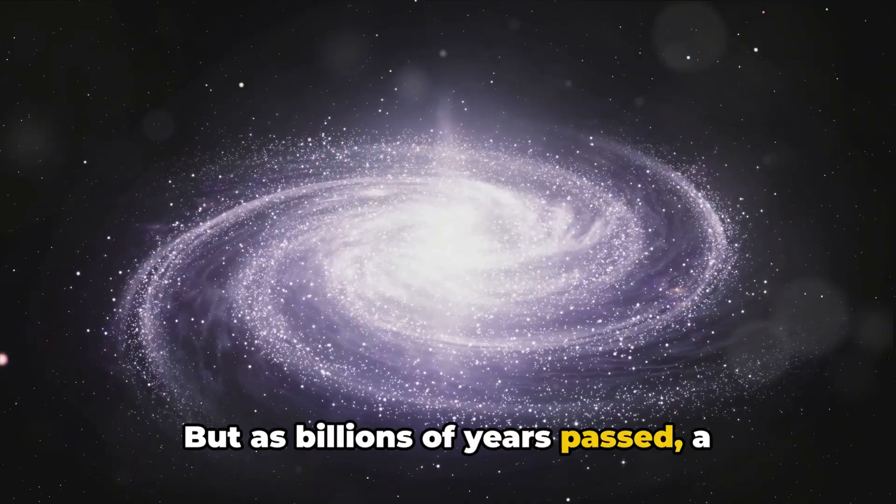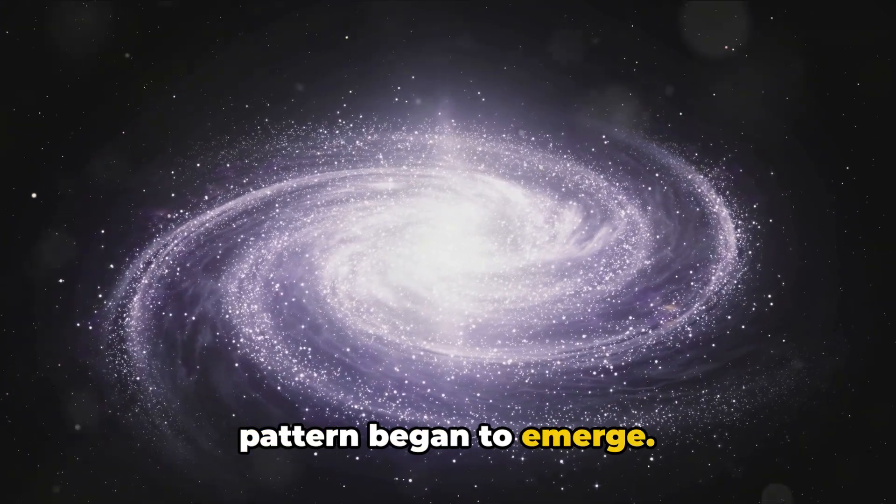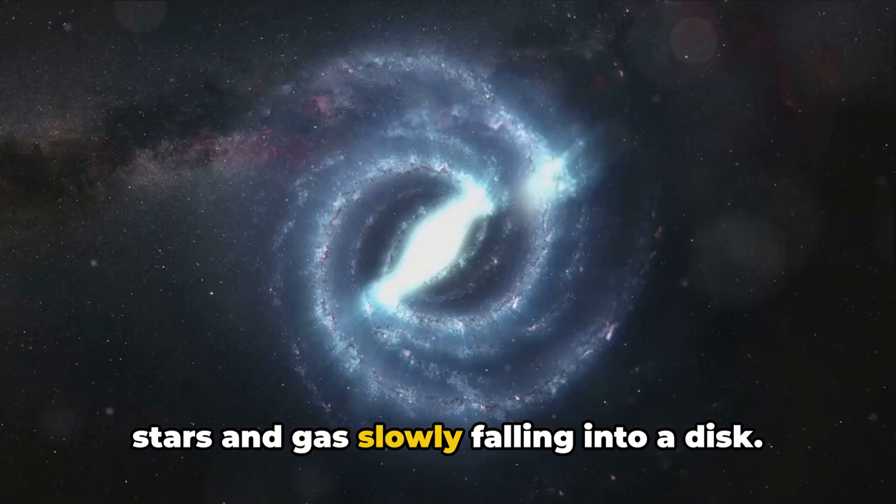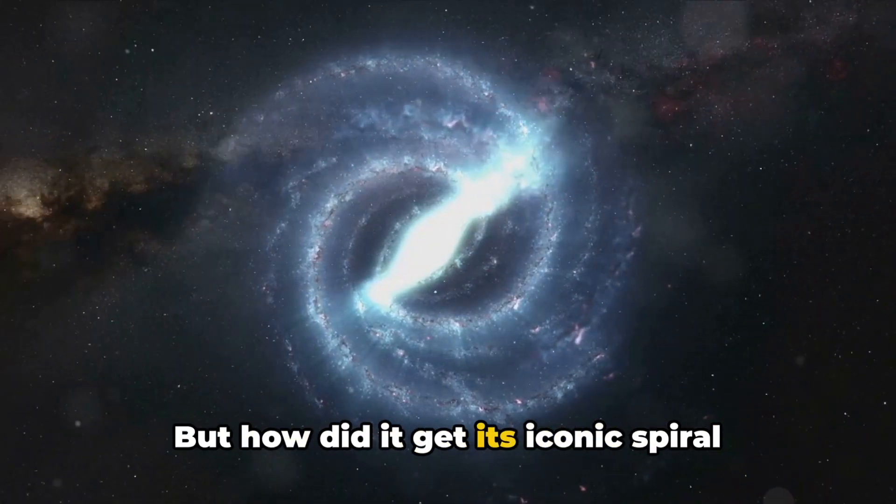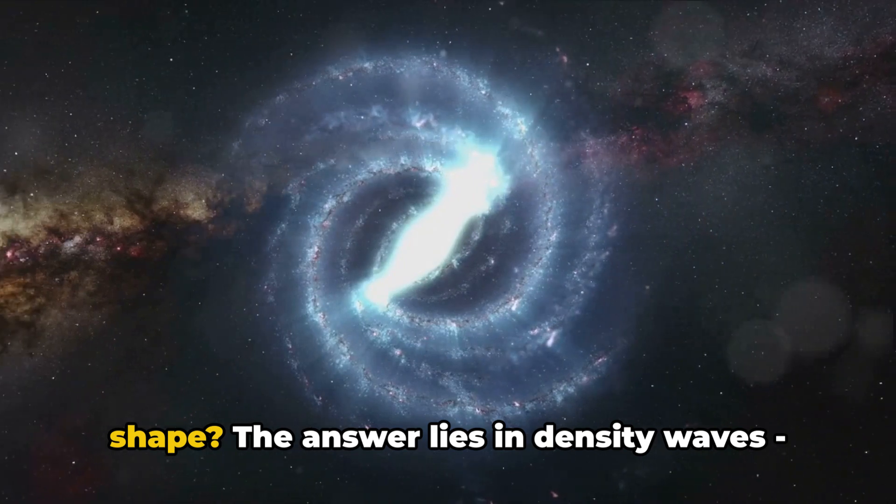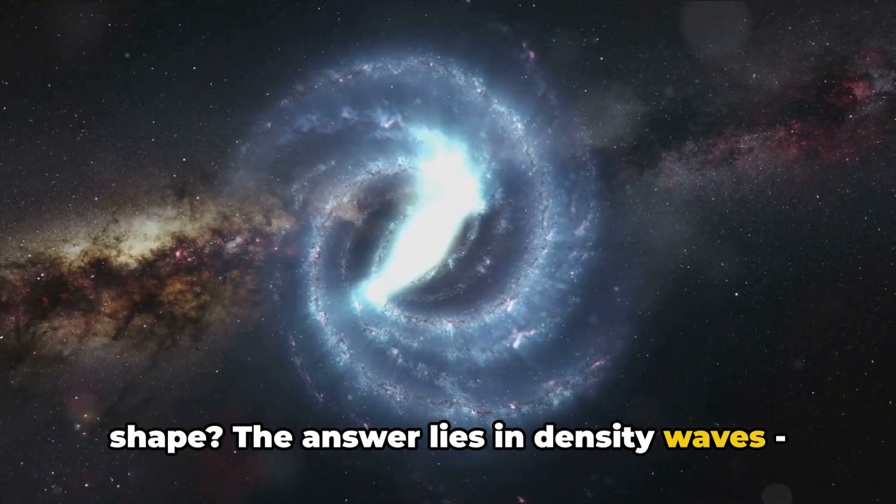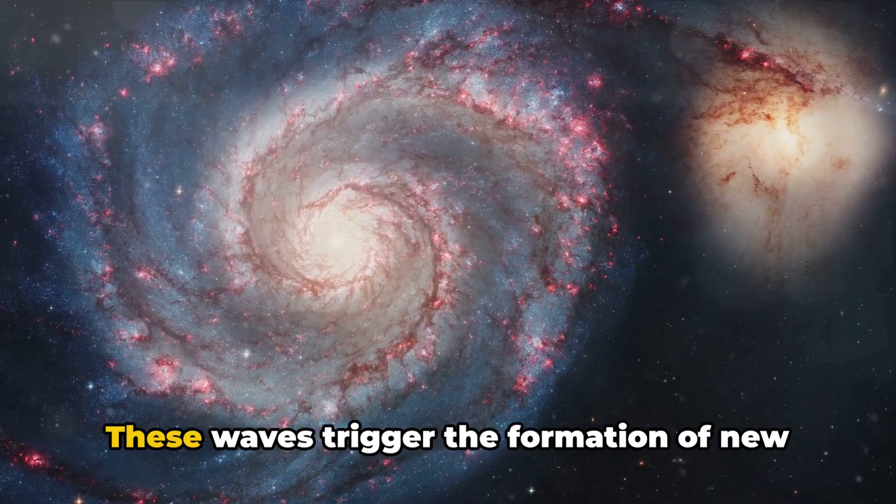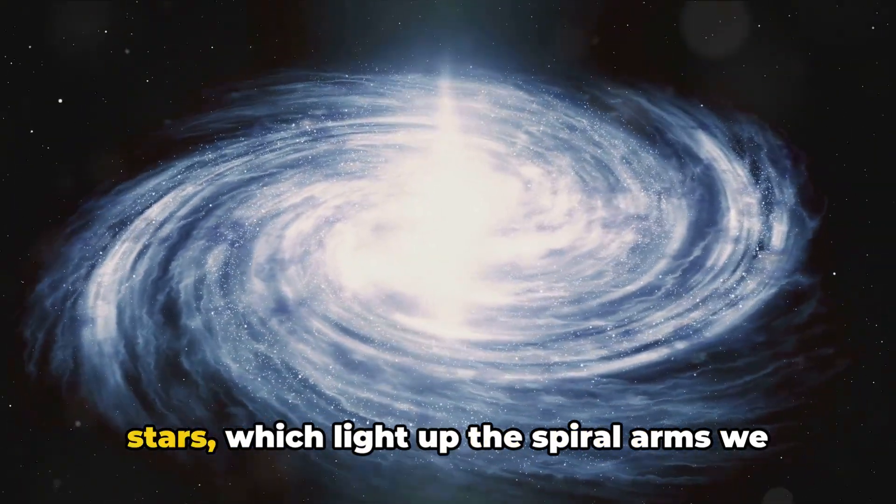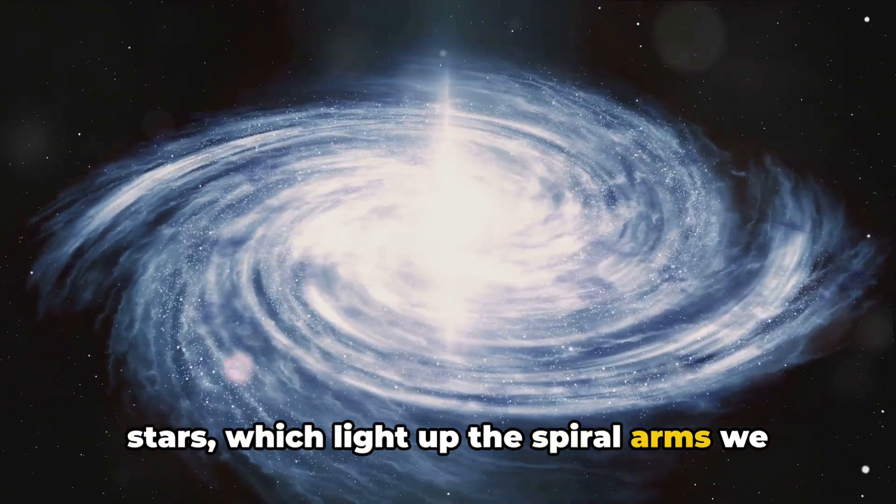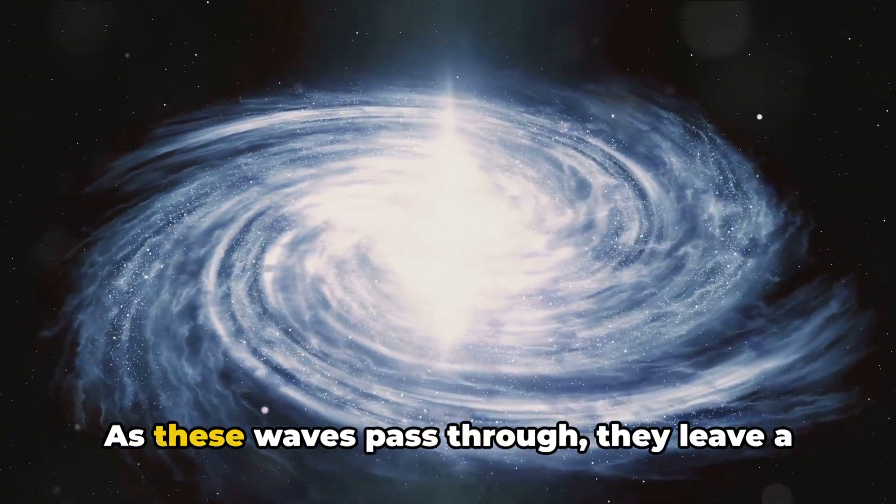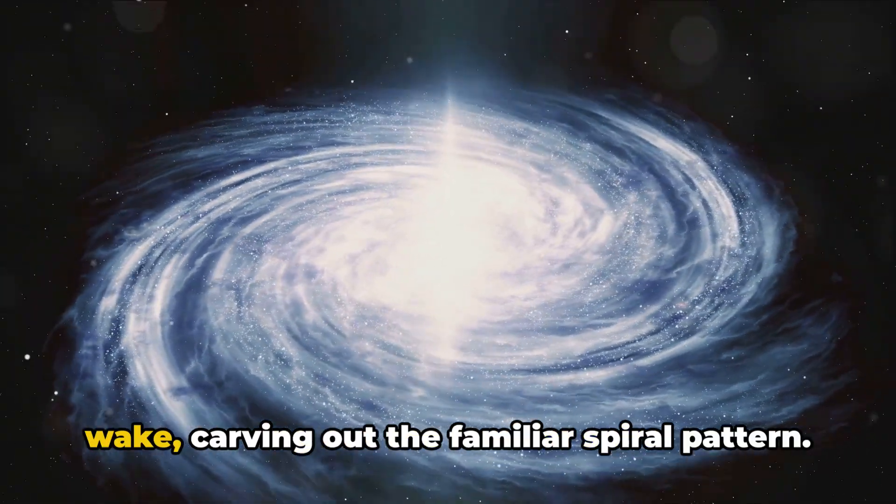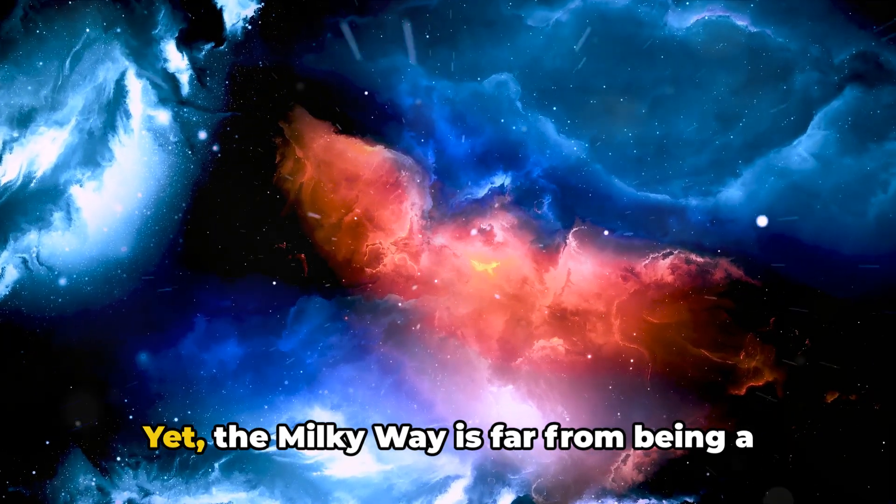But as billions of years passed, a pattern began to emerge. The Milky Way started to flatten out, its stars and gas slowly falling into a disk. But how did it get its iconic spiral shape? The answer lies in density waves, ripples that move through the galaxy, compressing gas and dust as they go. These waves trigger the formation of new stars, which light up the spiral arms we see today. As these waves pass through, they leave a trail of bright, young stars in their wake, carving out the familiar spiral pattern.